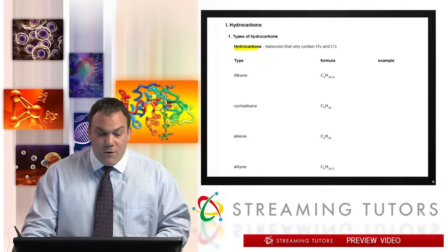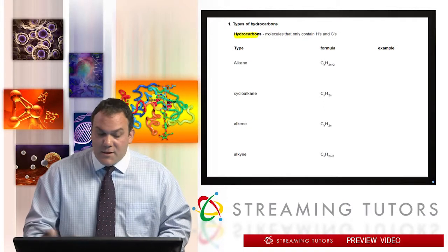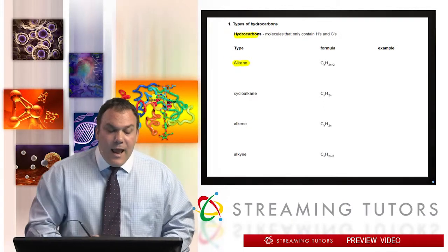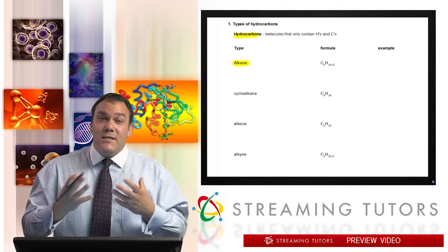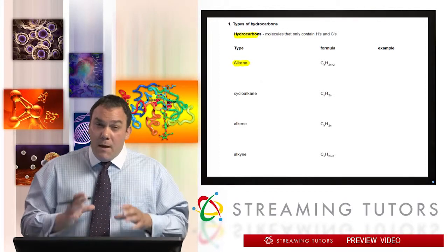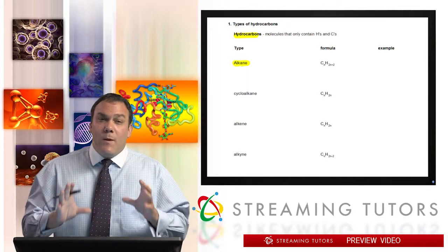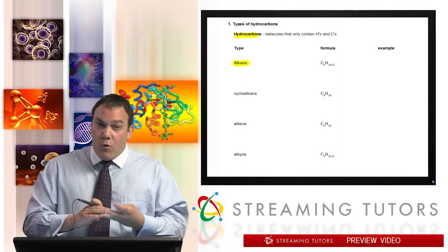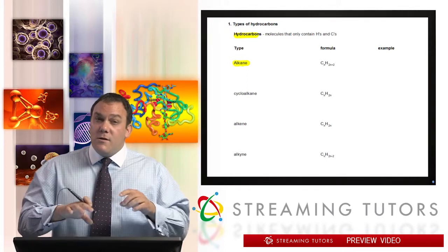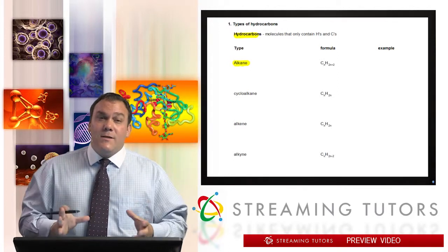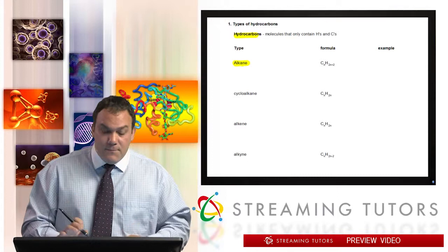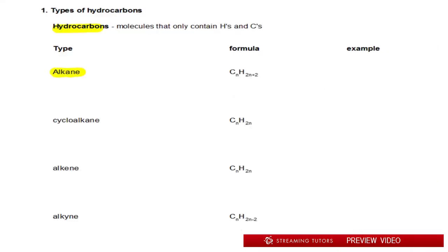But for now we're going to focus where the entire molecule is a hydrocarbon, H's and C's, that's it. Now there are a few different types of hydrocarbons. The first one here that we see is the alkane. An alkane is where we have what's called a saturated, fully saturated hydrocarbon because it has the maximum number of bonds for each carbon, four bonds per carbon. So they're sp3 carbons and it's all single bonds to H's and carbons.